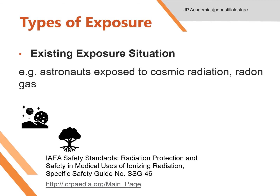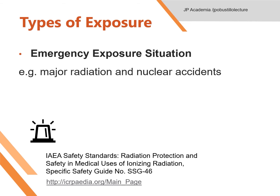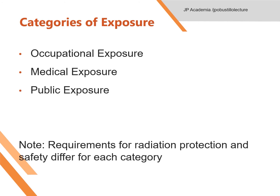The second type is existing exposure situations. These are situations that already exist when a decision on regulation or control has to be taken. Usual examples are those naturally occurring radiation sources — such as an astronaut exposed to cosmic radiation, and radon gases present in the earth. The last type is emergency exposure situations. These are unexpected situations that may require urgent protective actions, such as major radiation and nuclear accidents like a nuclear power plant meltdown.